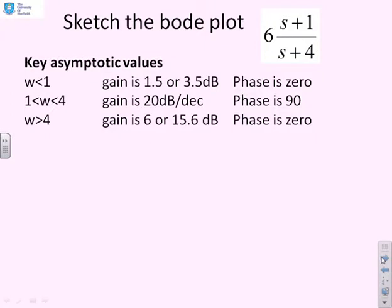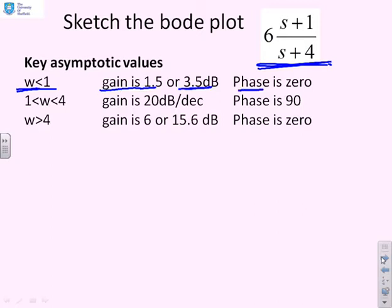First we'll use the asymptotic approach. If omega is less than 1, then the gain asymptote is going to be 6 over 4, or one and a half, which is about 3 and a half decibels, and the phase asymptote will be 0.